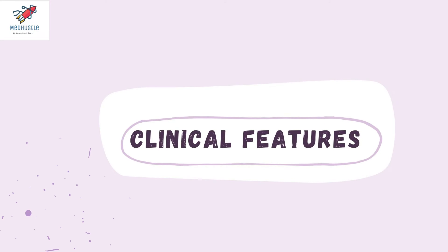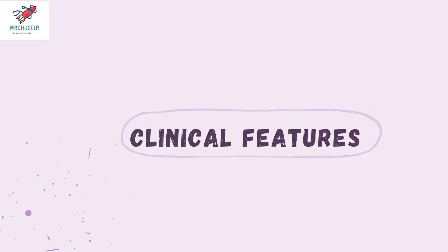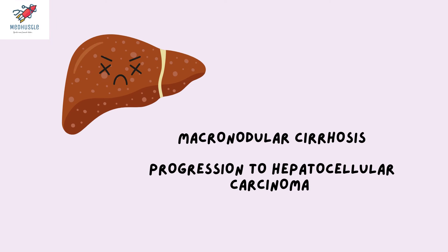The disease mainly affects individuals in the age group 3 to 50 years. The liver is the most common organ affected. The copper which accumulates is toxic for the hepatocytes. Typically, macronodular type of cirrhosis occurs and there is increased risk of hepatocellular carcinoma.